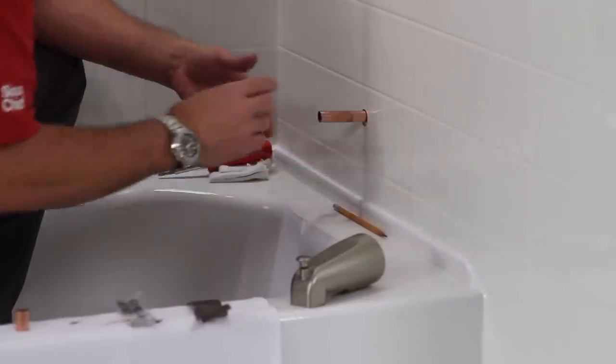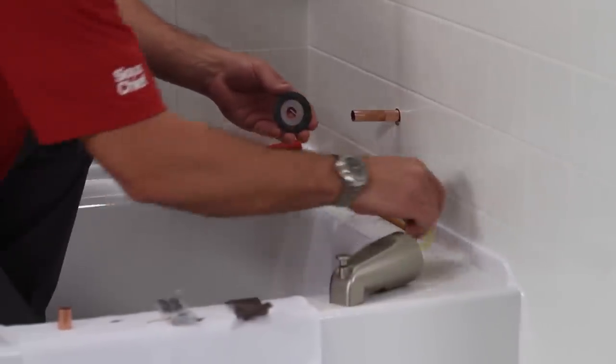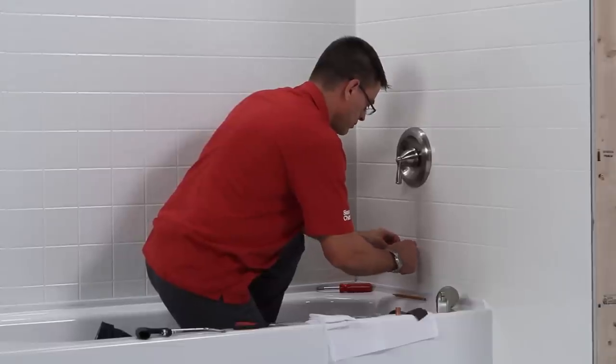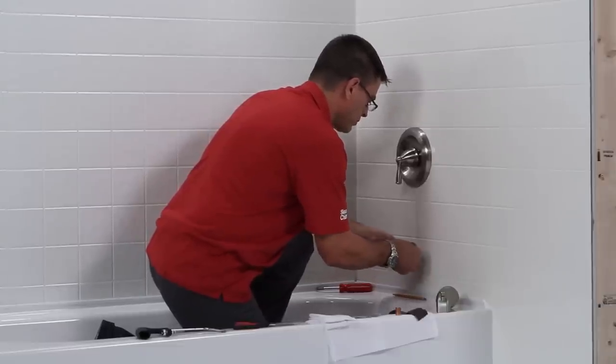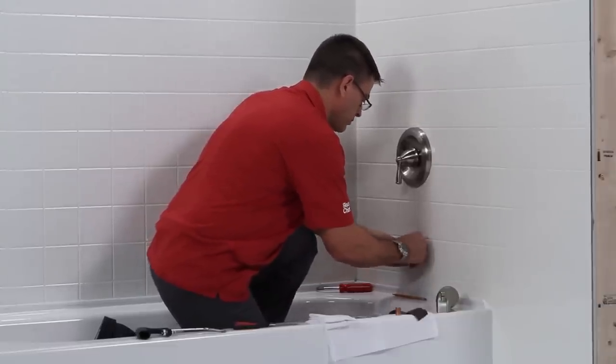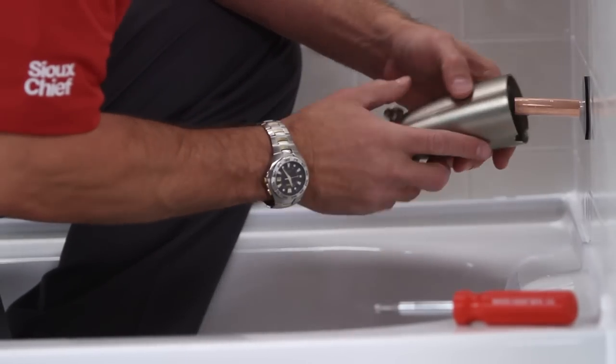Making sure the wall is clean and dry, remove the paper backing and install the dry seal pipe collar. Be sure to press the disc firmly against the wall. Install the SmartSpout over the copper tube and push it against the wall.